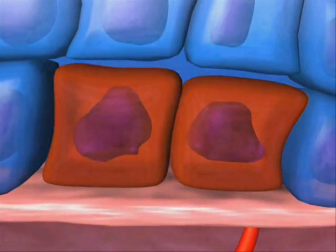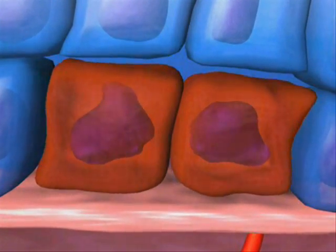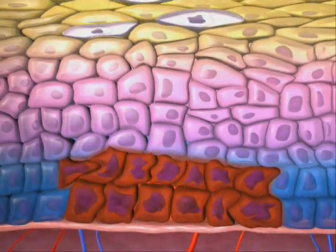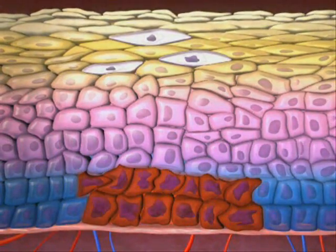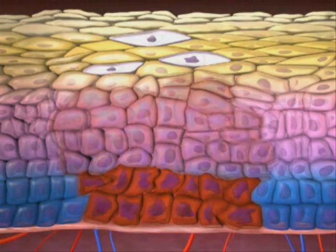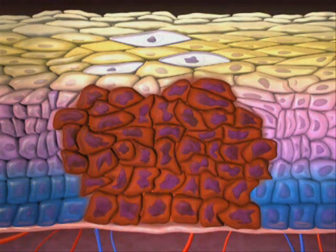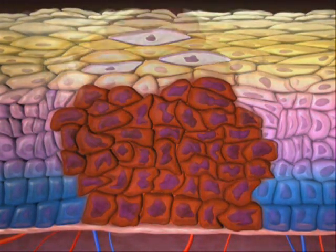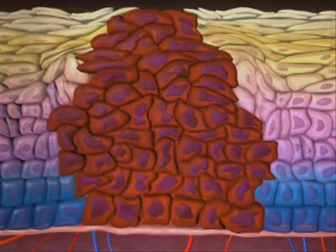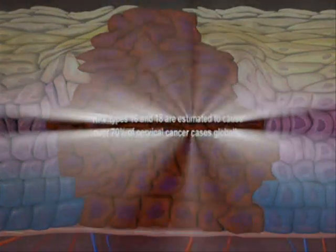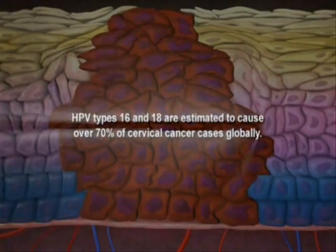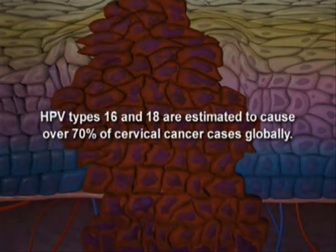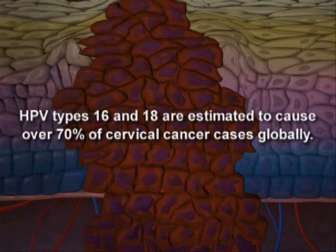Normal cellular mechanisms that protect cells from mutations are disabled. As mutations accumulate, the cells undergo morphologic changes that lead to the development of precancers or cancers of the cervix, vagina, or vulva. The HPV types 16 and 18 are estimated to cause over 70% of cervical cancer cases globally.